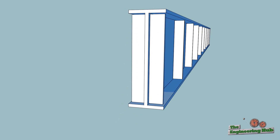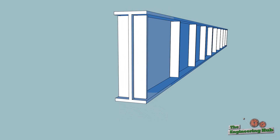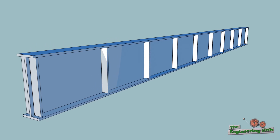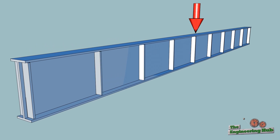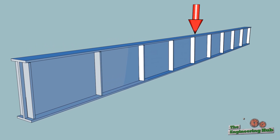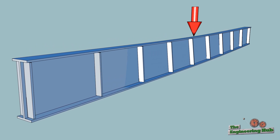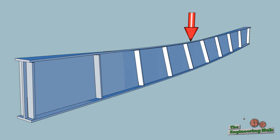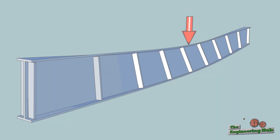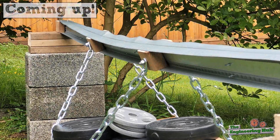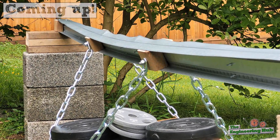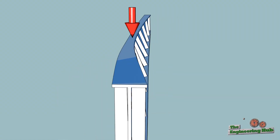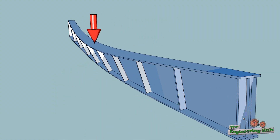When beams get loaded, they deflect in the direction of loading. This is very intuitive and logical. However, as the load increases, the beam begins to also deflect laterally. This lateral deflection is not as intuitive and requires a deeper investigation.